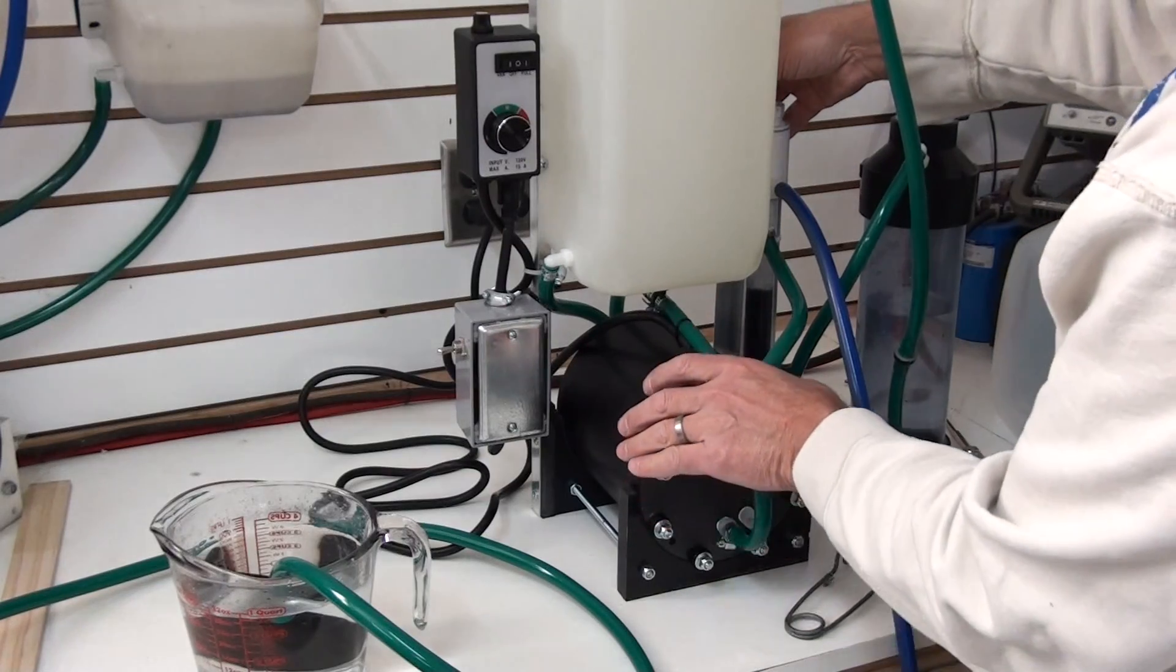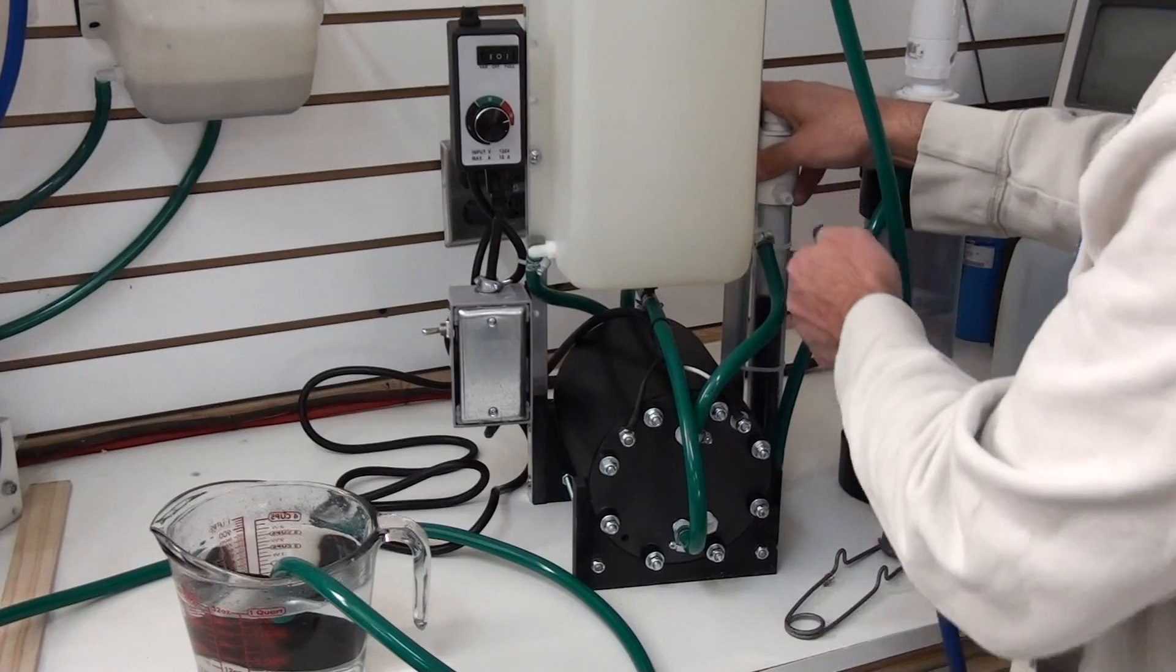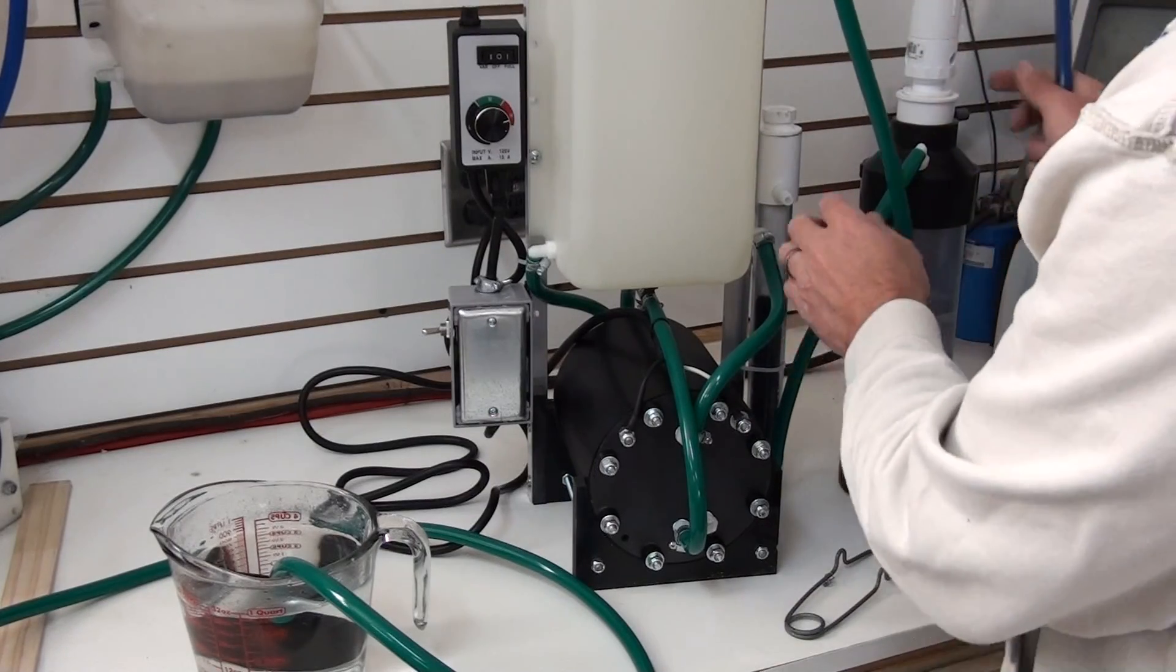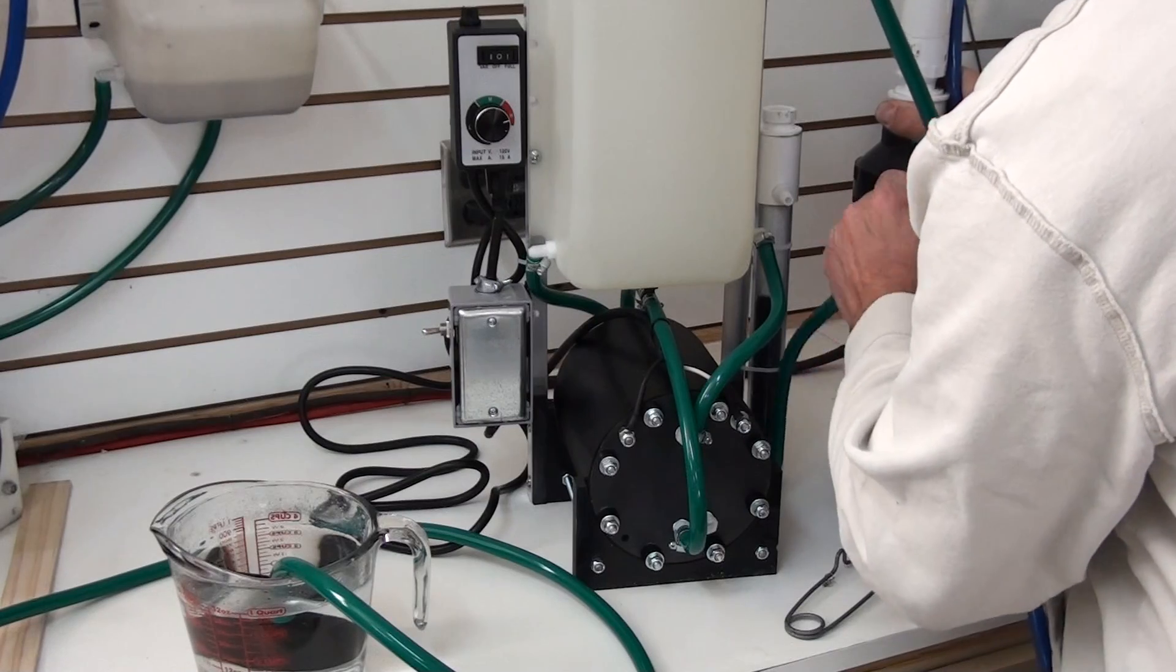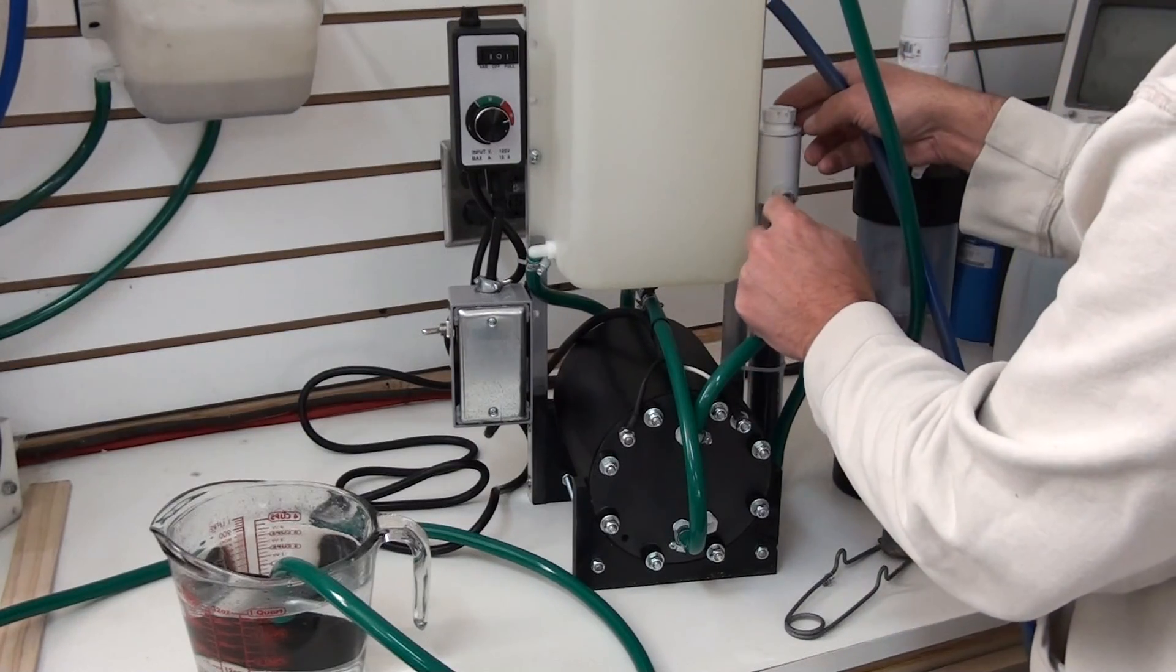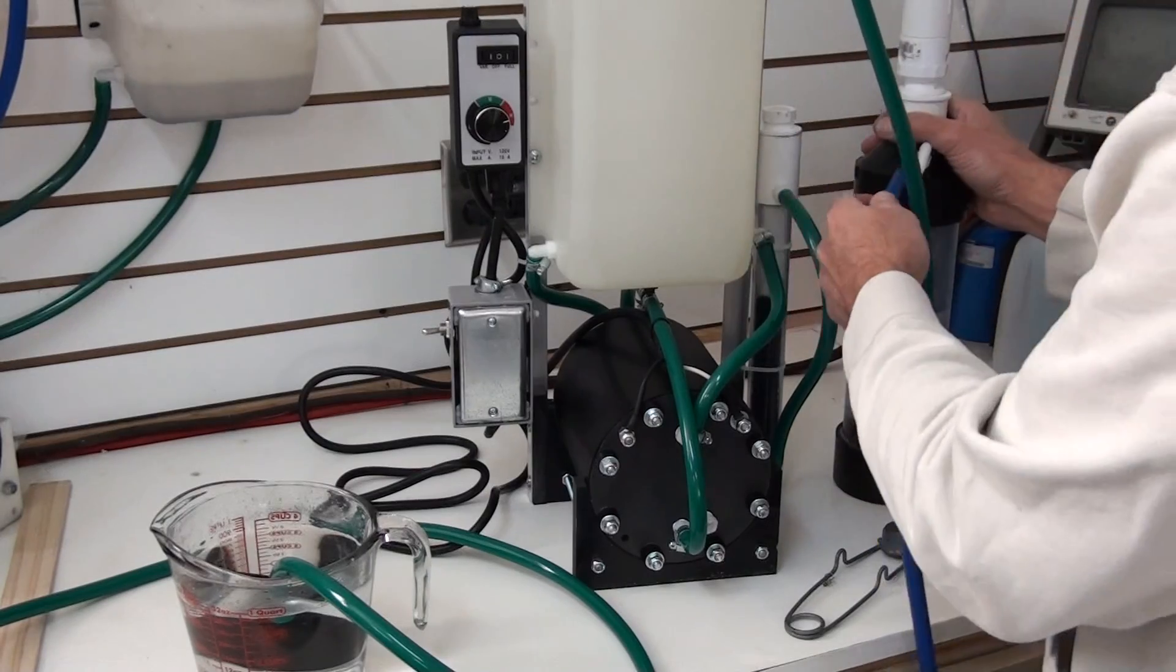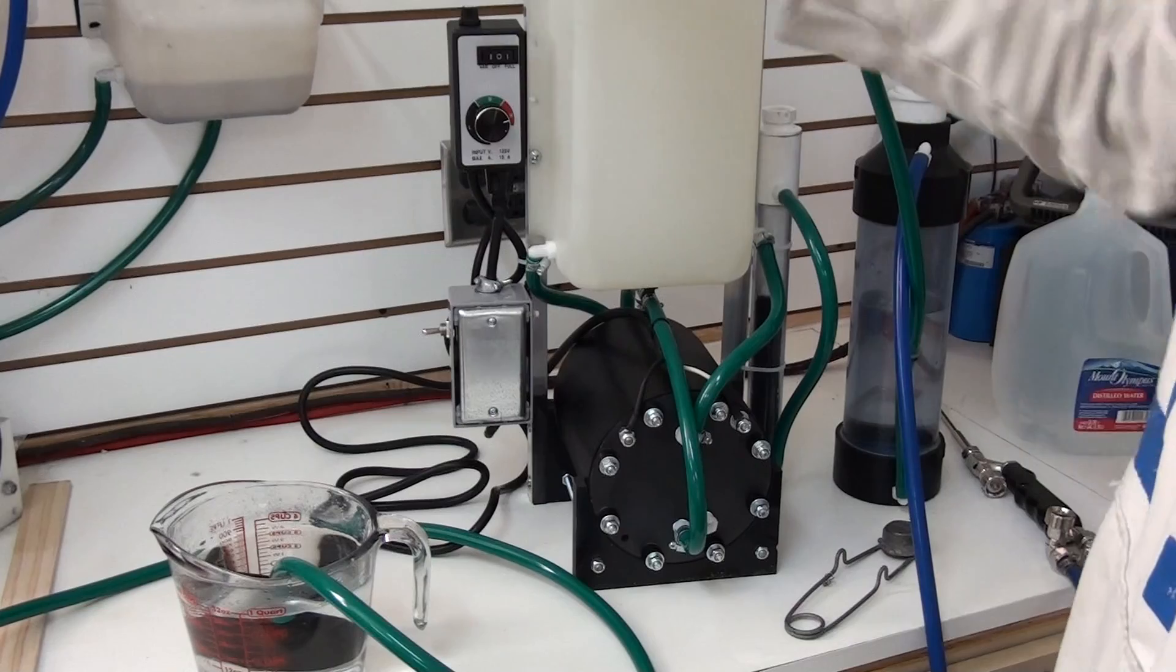Now when we hook the torch to this, we're going to want to bypass our filter because this is for hydrogen therapy and go directly off the bubbler. Attach it right there to the bubbler. I'll go ahead and turn it on.